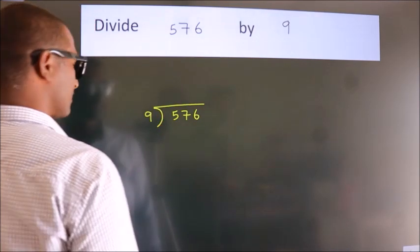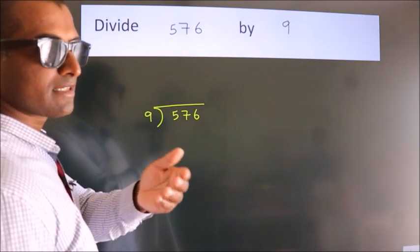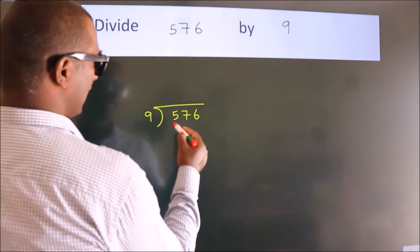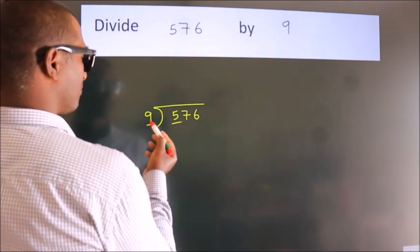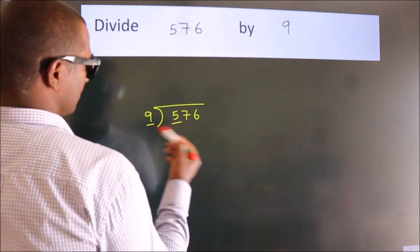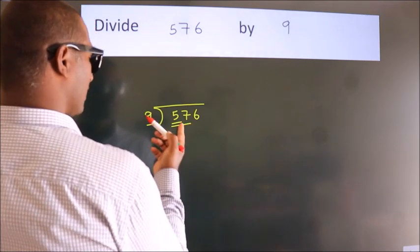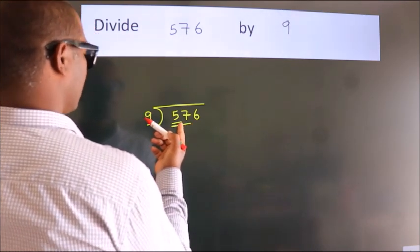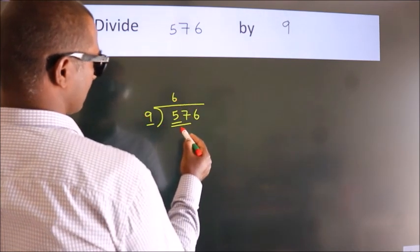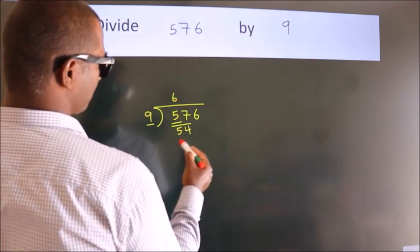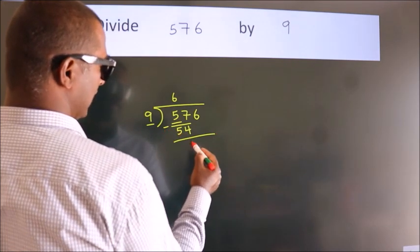This is your step 1. Next, here we have 5, here 9. 5 is smaller than 9, so we should take two numbers: 57. A number close to 57 in the 9 times table is 9 × 6 = 54. Now we subtract, we get 3.